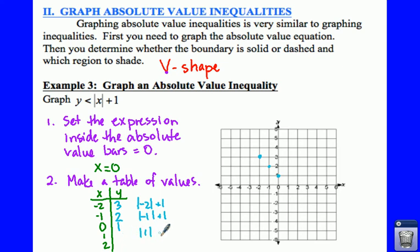Plug a one in there, the absolute value of one is just one. So one plus one is two. Notice we are starting to get our V shape back.